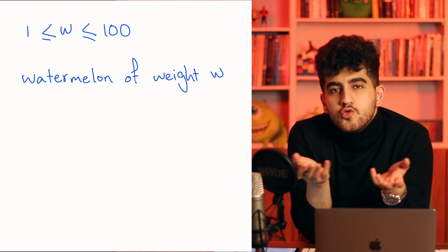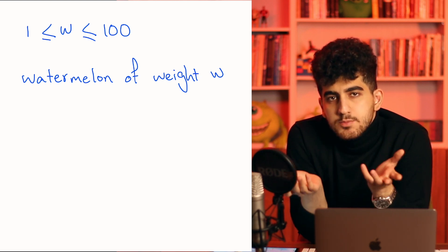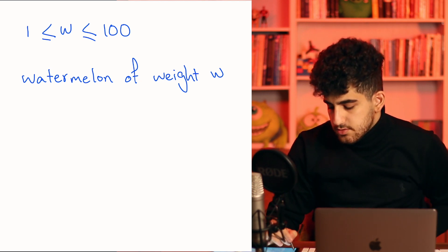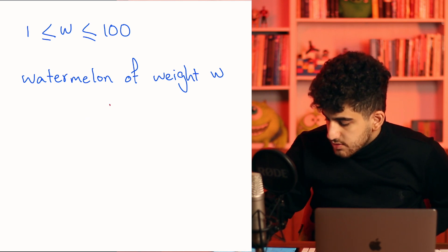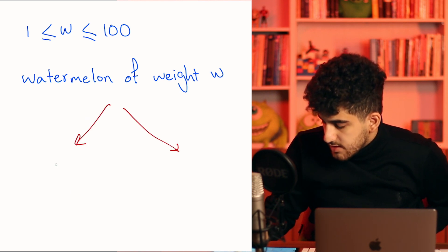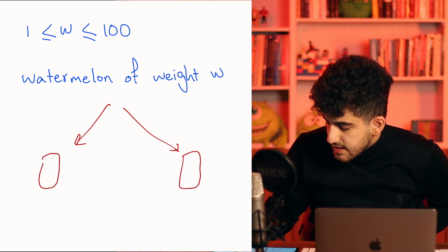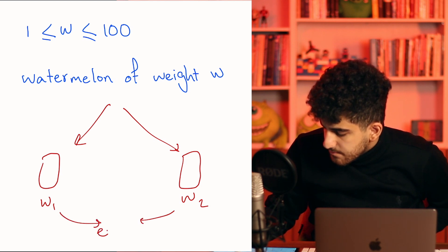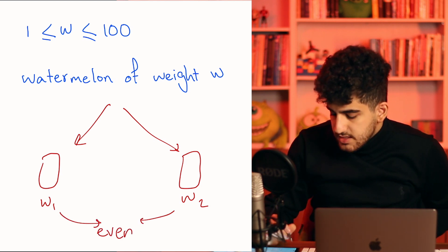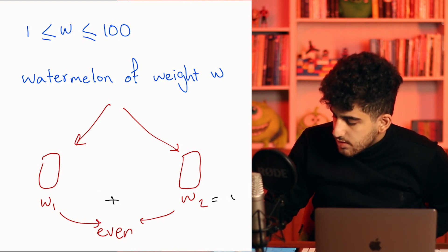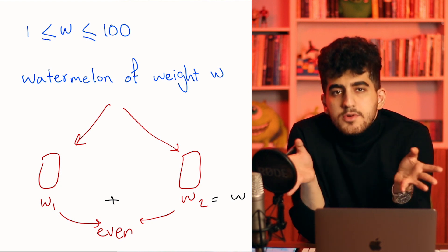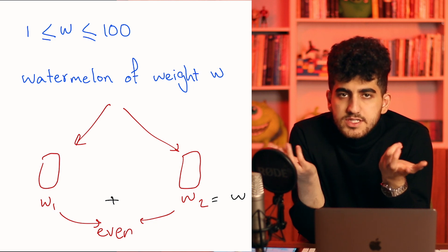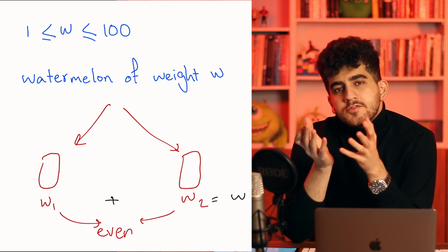You want to divide the watermelon between two boys. Each boy wants a part whose weight is an even number. So W1 plus W2 must equal W. You need to divide W into two numbers such that each is even and their sum equals W. You have to determine whether this is possible or not.